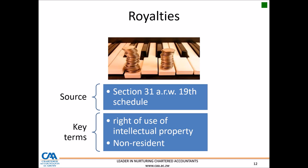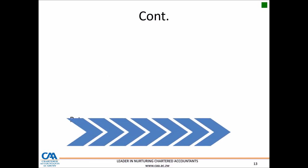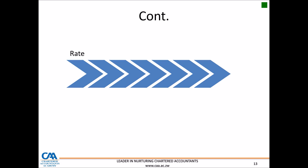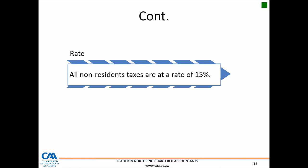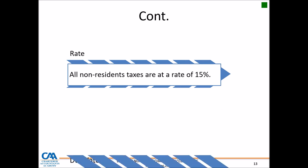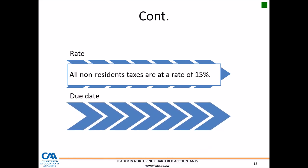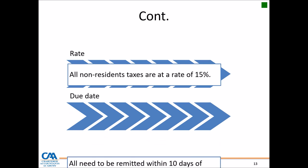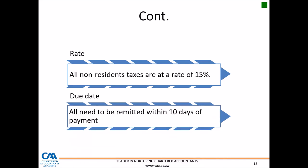What are the rates for non-resident taxes? For all non-resident taxes, the rate is 15%. The due dates for non-resident taxes are also important — all amounts need to be remitted within 10 days of the payment. So whenever you make the payment, 10 days later you need to remit the withholding tax to ZIMRA.